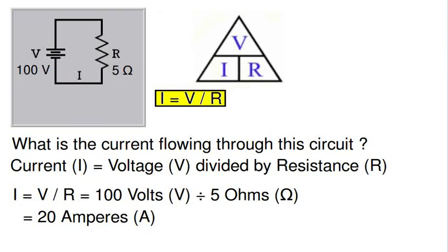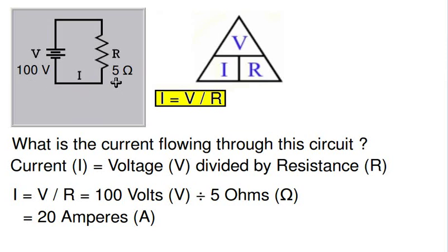Let's look at some examples of using Ohm's law to find electrical quantities in simple circuits. Here is a simple circuit consisting of a battery or voltage source connected by conductors or wires to a resistor or resistive load. The voltage of the power source is 100 volts and the resistor has a value of 5 ohms. What is the current flowing through this circuit?